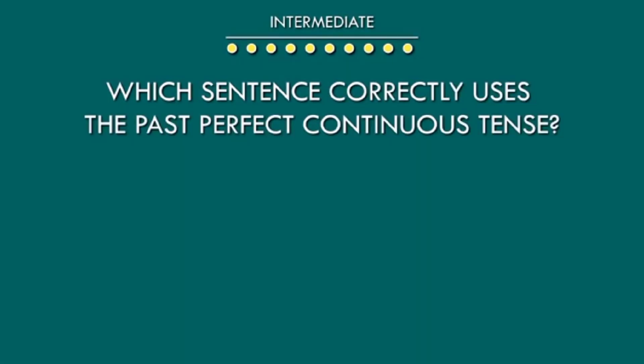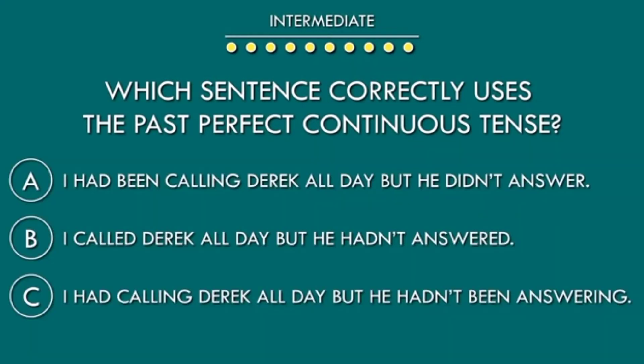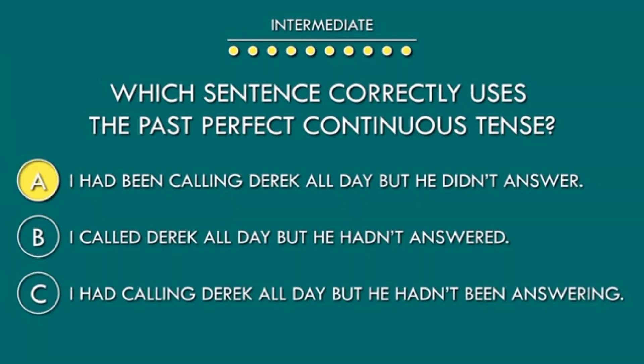Which sentence correctly uses the past perfect continuous tense? A: I had been calling Derek all day but he didn't answer. B: I called Derek all day but he hadn't answered. C: I had calling Derek all day but he hadn't been answering. A is the correct option.